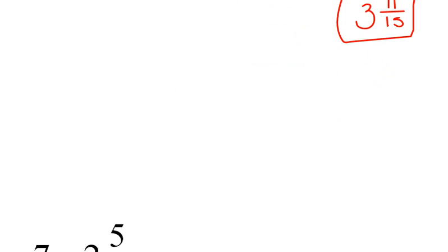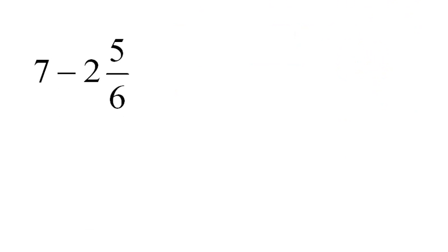Let's do another one. Here we have 7 minus 2 5/6. I'll rewrite this as 7 minus 2 5/6. Remember, when we add and subtract, we work with the fraction parts and then the whole number parts. We can't take 5/6 away from nothing, so we're going to have to borrow from the 7.